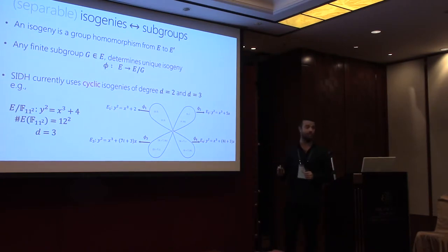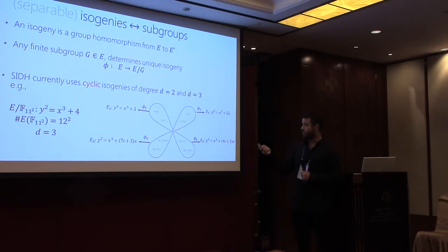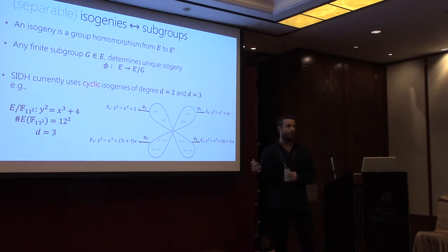What is an isogeny? You can think of it in either a geometric or an algebraic sense. Geometrically, it's a map from points on an elliptic curve to points on another elliptic curve. Algebraically, it's also a group homomorphism between the two groups. In this talk, we're going to be dealing with separable isogenies. You can think of computing an isogeny as determining any finite subgroup on the starting curve E. As soon as you fix a finite subgroup on the first curve, that uniquely, up to isomorphism, determines an isogeny and the image curve E_G.